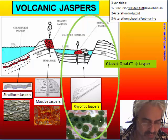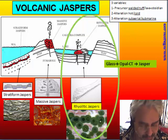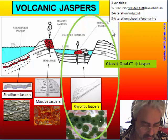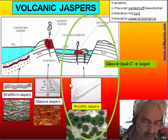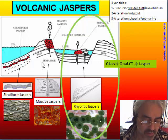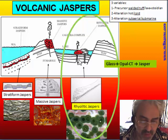The most common place where volcanic jaspers are found is a rhyolitic caldera complex — a very big volcanic complex with caldera formation resulting from very large rhyolitic eruptions. These volcanic fields are characterized by a very big magma chamber under the volcano, a lot of heat, many fumaroles, and a big heat gradient.